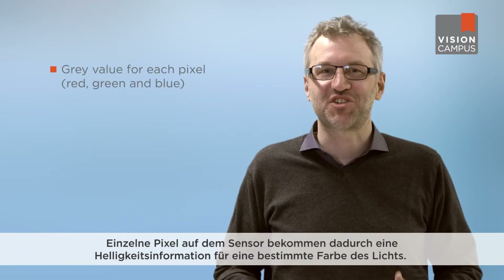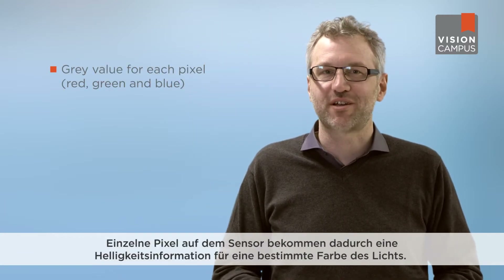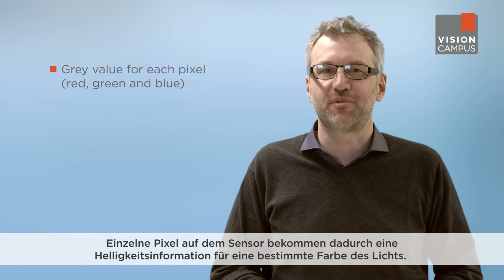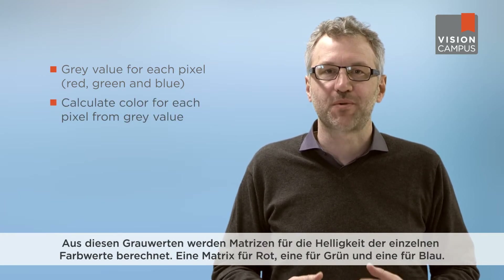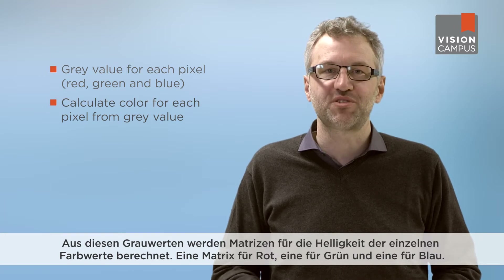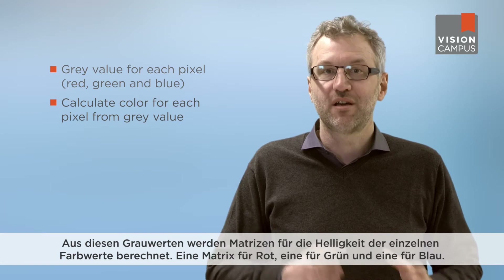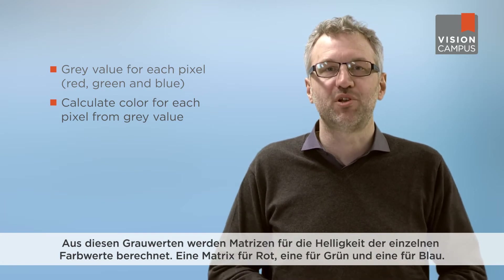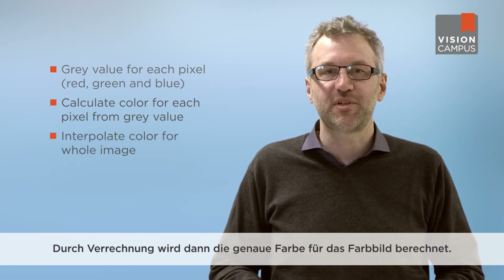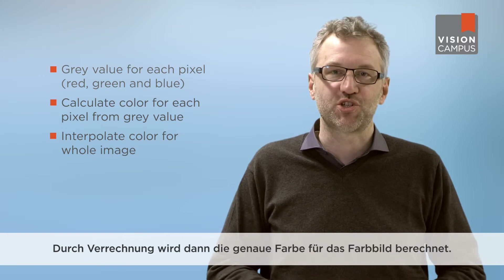As the different portions of the light pass through, each color is channeled to the relevant portion of the sensor. The individual pixels on the sensor can then record brightness information for a specific color of light. Those values are run through a complicated formula that produces three separate matrices of gray values — one for red, one for green, and one for blue — which are ultimately combined into a color image.